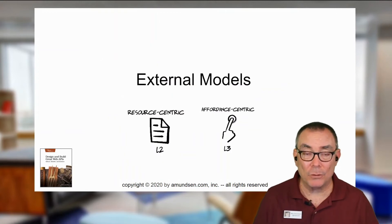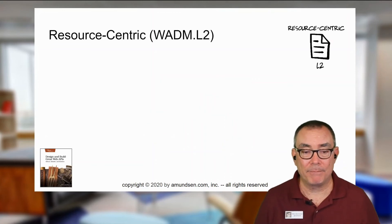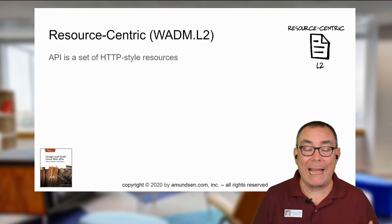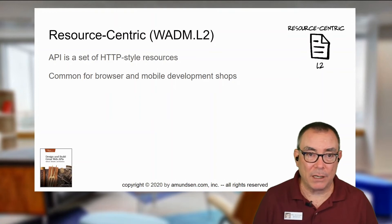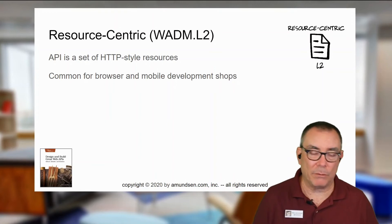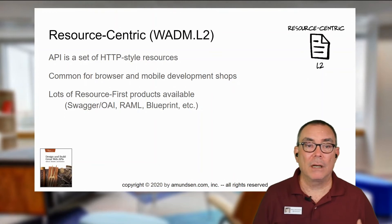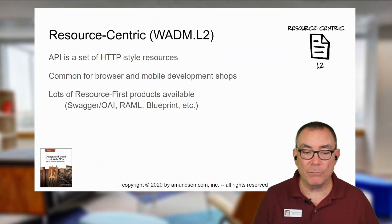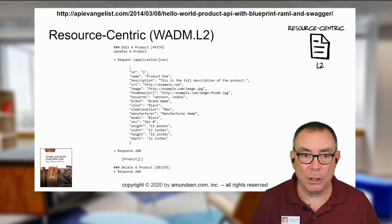And that leads us to this notion of external models rather than internal models — resource-centric and affordance-centric. Resource-centric models actually are the way most APIs are built today, especially those that are HTTP style. It's very common for browsers and mobile development. So I have a customer resource, a sales resource, a user resource, a transaction resource, a banking resource, a credit resource, a debit resource. There are lots of resource-first products that are available — OpenAPI, RAML, Blueprint — all of these tools help you focus on a very resource-oriented way of thinking about it. This is an example of a resource description in API Blueprint. I like API Blueprint a lot; it's currently supported by Oracle and there are lots of open source tools on it.